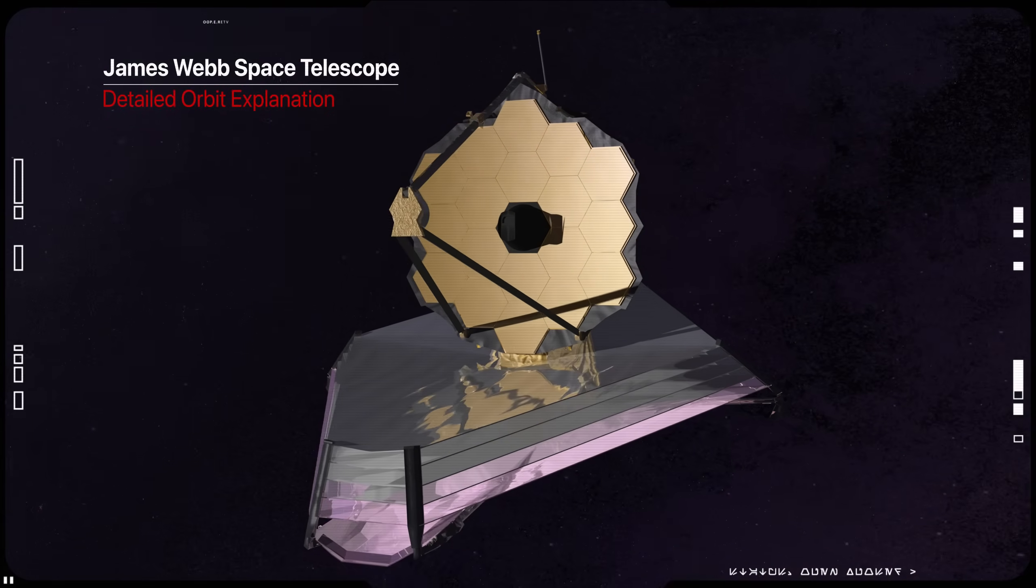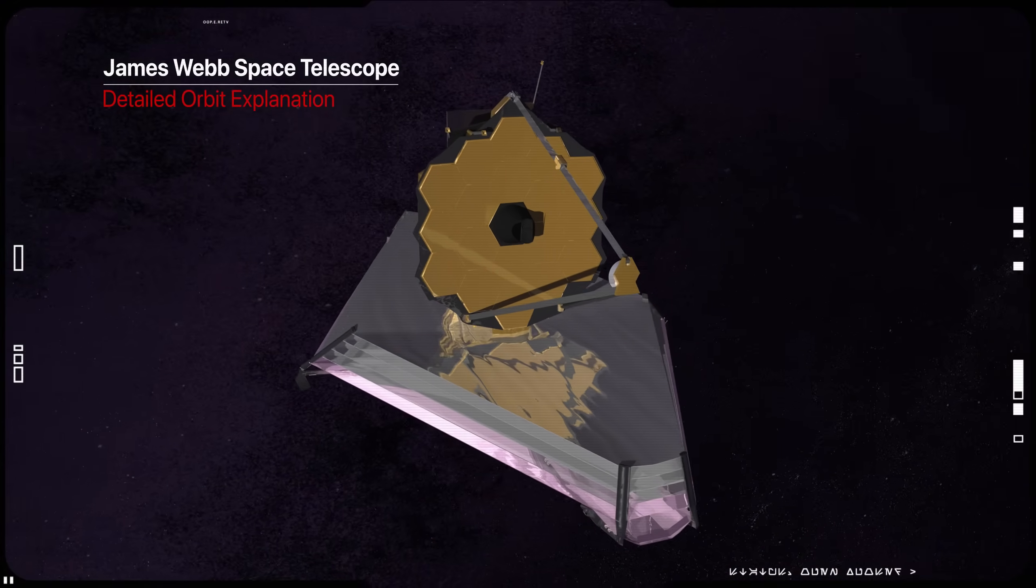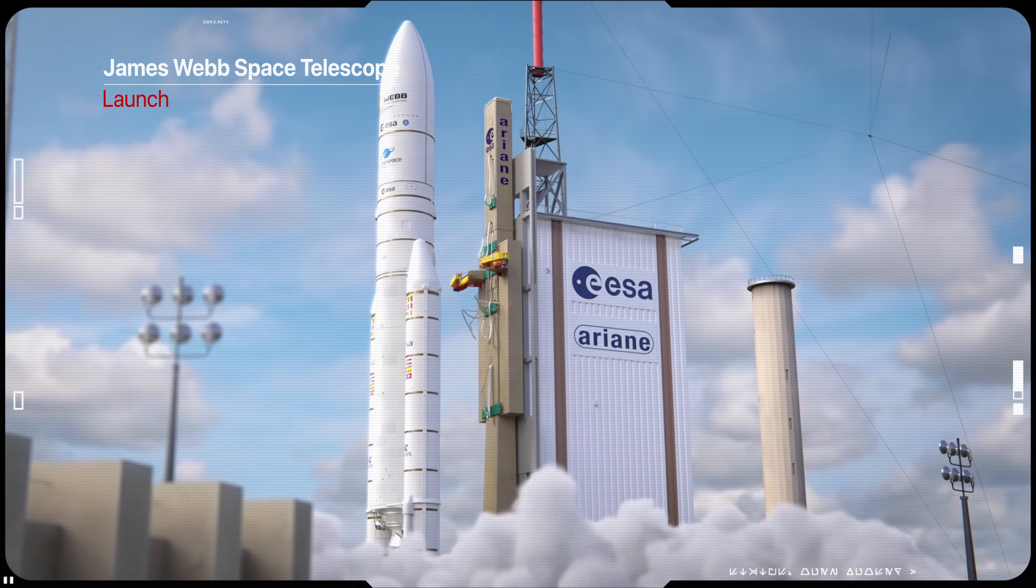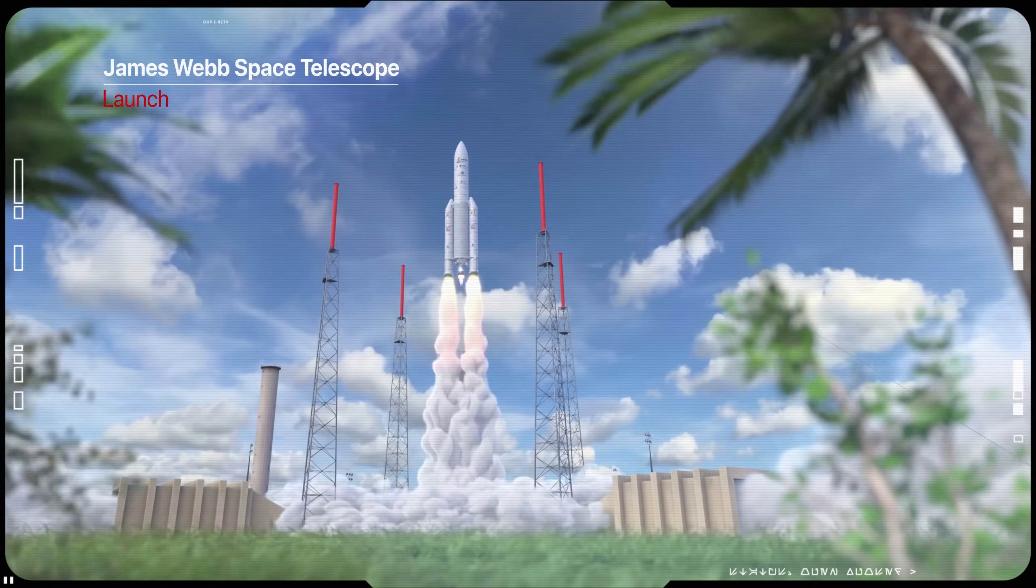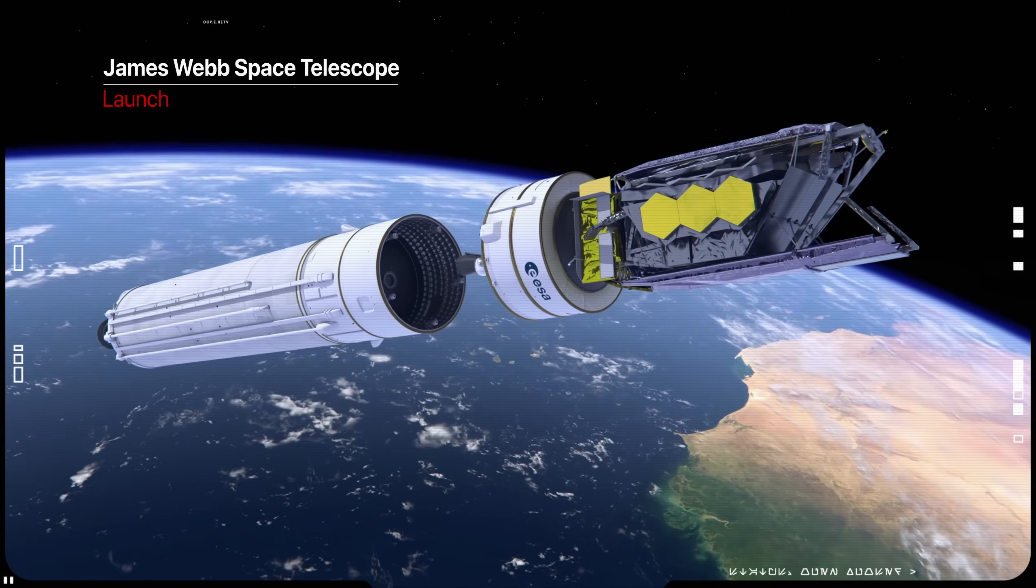1.5 million kilometers from Earth and one month's flight to its destination. On December 26, 2021, after years of delay, NASA launched the most expensive space observatory ever – James Webb Space Telescope.